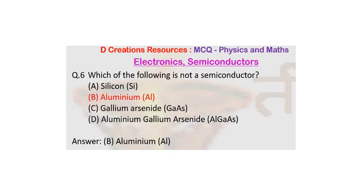Now as you can see, the answer is B. Aluminium, which is a metal, and the rest of them are semiconductors.